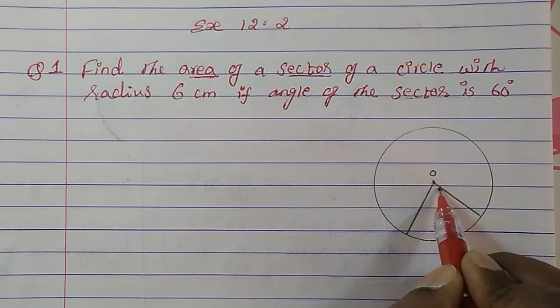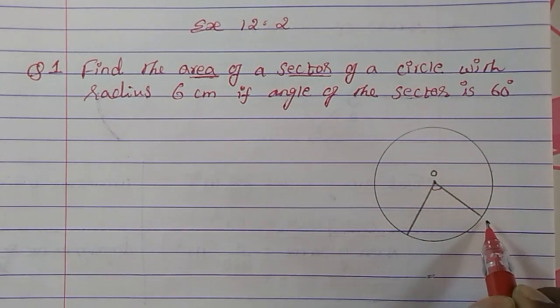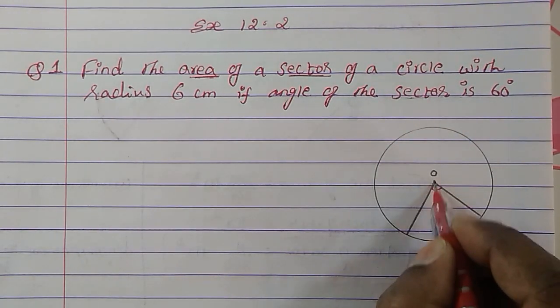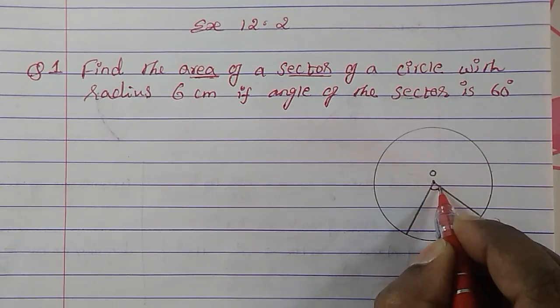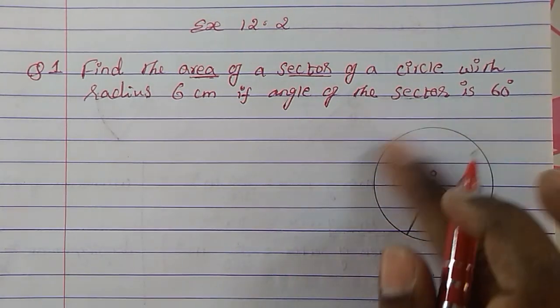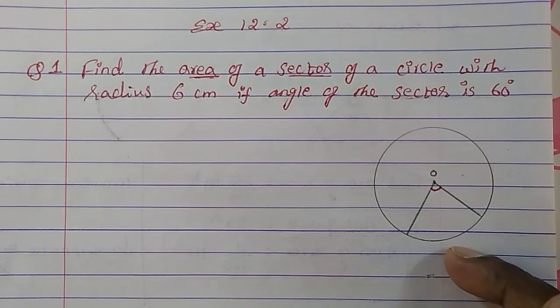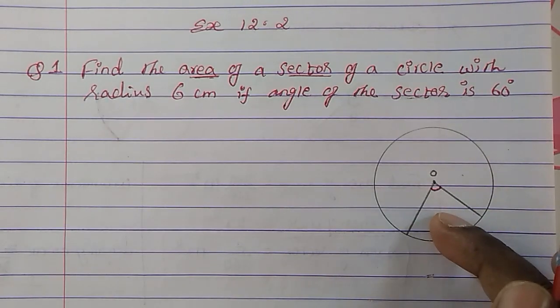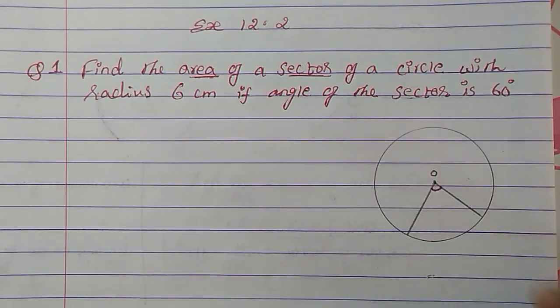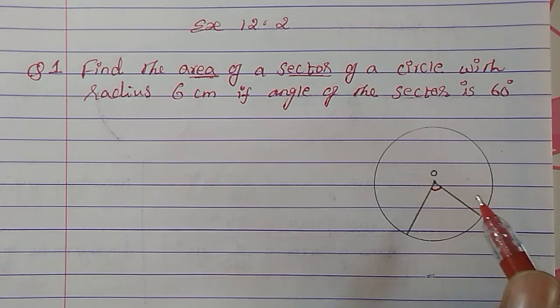two radii divide the circle into two parts. These two radii divide the circle at this point—this bigger piece and this smaller piece. The smaller piece we call the minor sector and the bigger one we call the major sector.